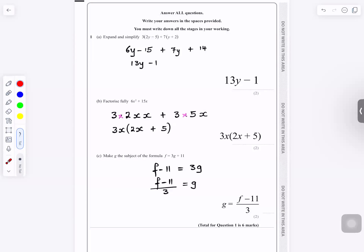Question number one: expand and simplify. So you want to remove the brackets. Three times 2y is 6y, 3 times minus 5 is minus 15, 7 times y is 7y, 7 times 2 is 14. So 6y plus 7y is 13y.